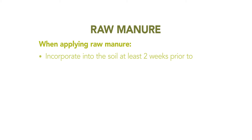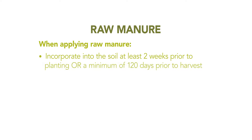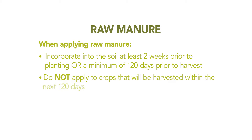When applying raw manure, the manure should be incorporated into the soil at least two weeks prior to planting, or a minimum of 120 days prior to harvest. In other words, manure should not be applied to fields where crops will be harvested within the next 120 days.